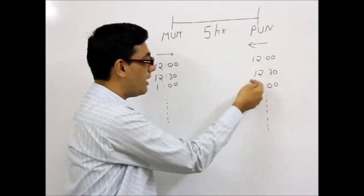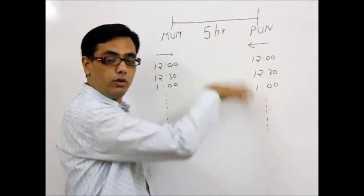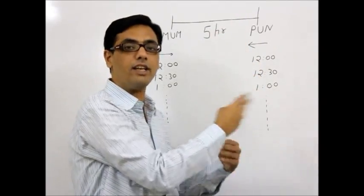12, 12:30, 1, 1:30 and so on till 12. So there is a continuous cycle of simultaneous buses.